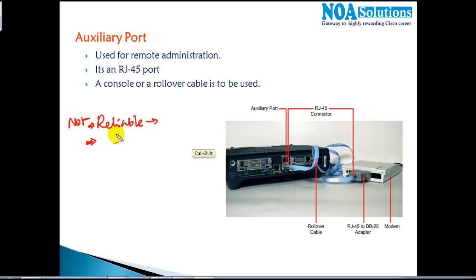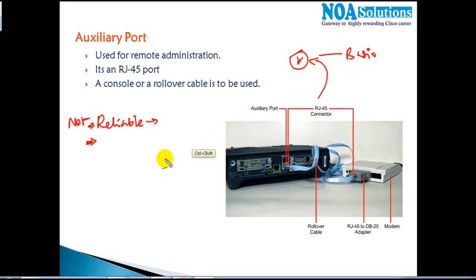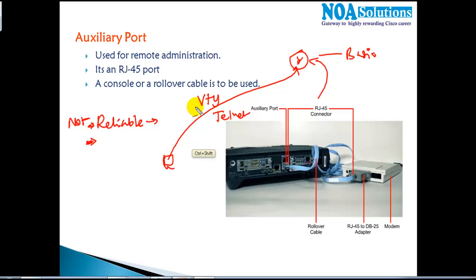In today's production networks, there is usually an engineer at each location who can do console connection for basic configurations. The most common way to access devices remotely is via Telnet — in routers this is called VTY lines. We'll get into how Telnet works in later sessions.